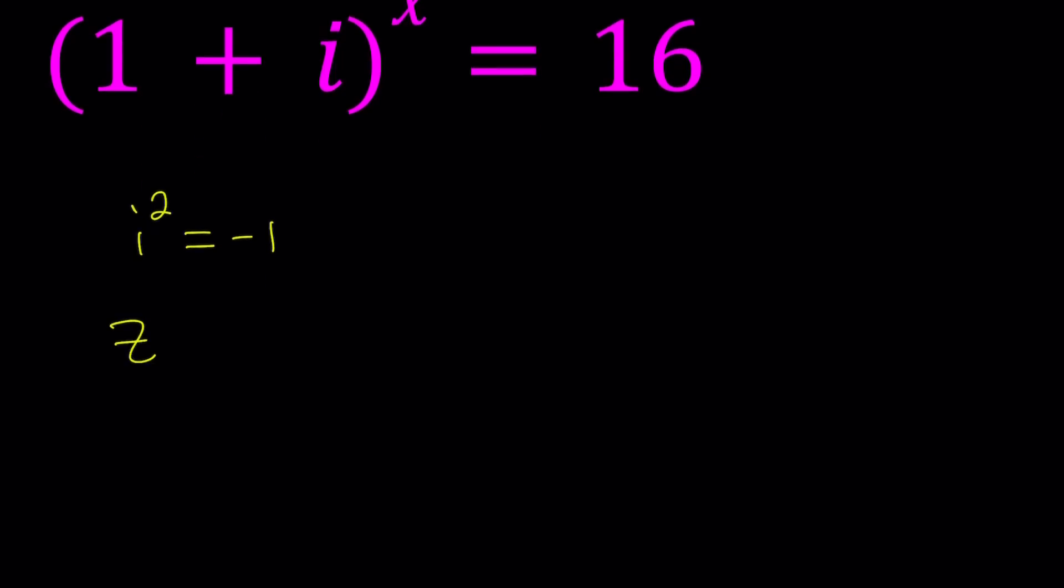We're going to define a complex number z as 1 + i. Then we're going to find its absolute value, which can also be written as the modulus or r. And r is going to be the square root of 1 squared plus 1 squared, which is square root of 2.